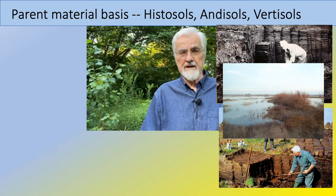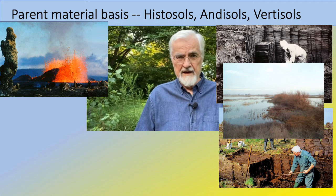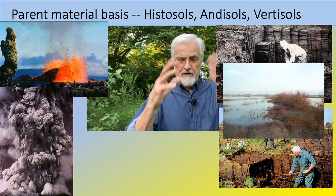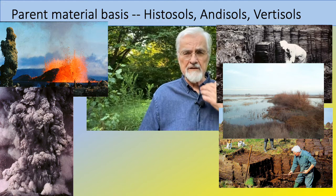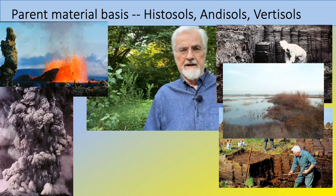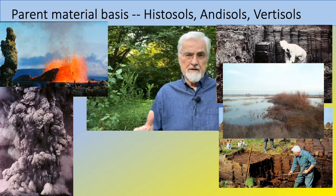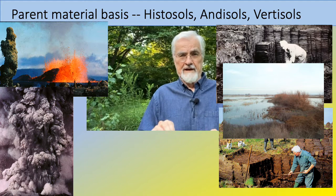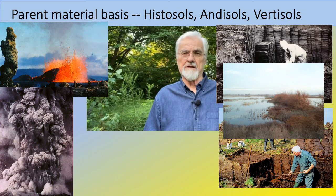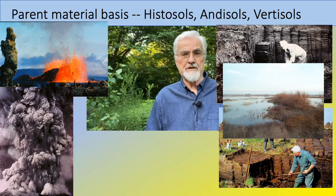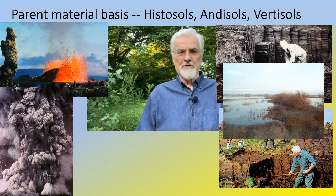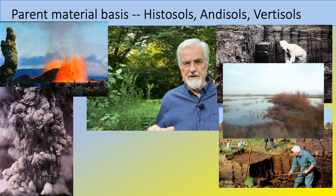The second soil type based on parent material is andosols. Andosols come from volcanic activity — either eruptions or pyroclastic explosions producing volcanic ash. With lava flows, the hardened lava breaks down through plant succession and becomes soil. With pyroclastic ash, the ash itself is a good parent material for soil formation. These soils are often rich in mineral elements needed for plant nutrition, though they're usually lacking in nitrogen, which is why legumes are often pioneer species at volcanic sites.